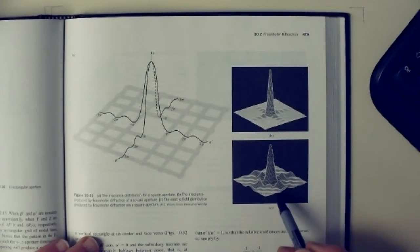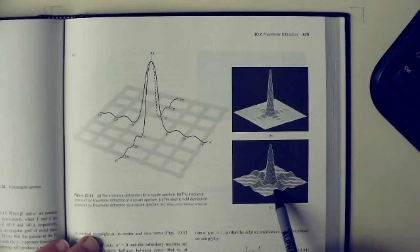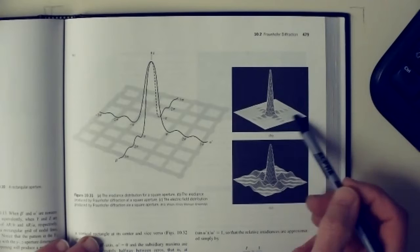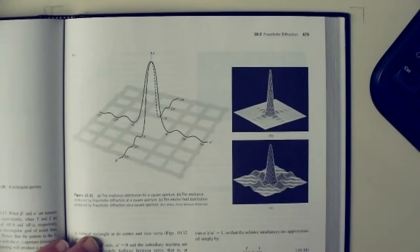It can be interesting to look at a diffraction pattern and reason back to the shape, size, and number of slits in each direction. The second figure shows the electric field, which has both negative and positive values, so the numbers aren't as extreme and you can see more of the diagram. Once you square it, the big central peak is much bigger, the small ones are much smaller, and everything is positive. Generally you just look at the intensity, which is what you would see.